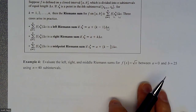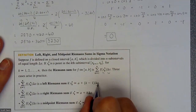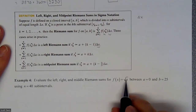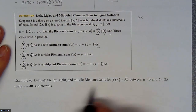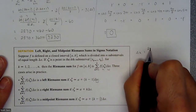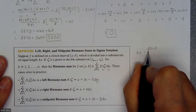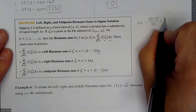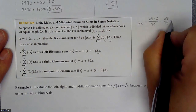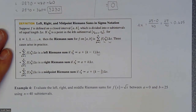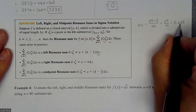We're going to do a little bit of work and then eventually plug it into the calculator. The first thing we need is the width. Our delta x for this problem: we're going from 0 to 25 with 40 subintervals. So we take the difference, which is 25 minus 0, and divide by 40 individual pieces. That gives us 25 divided by 40, which is 0.625. That is the width of every single one of our rectangles.